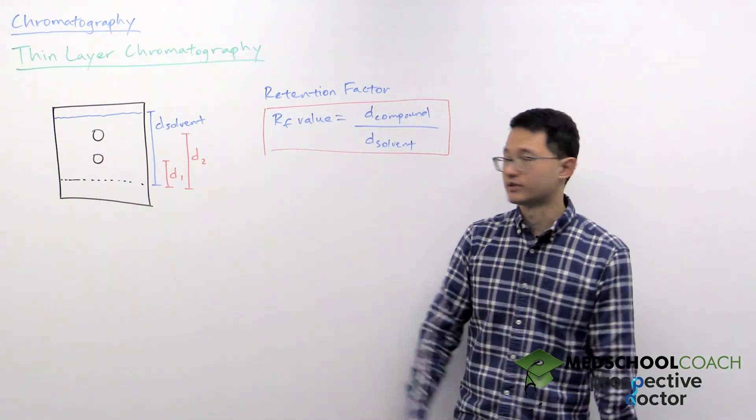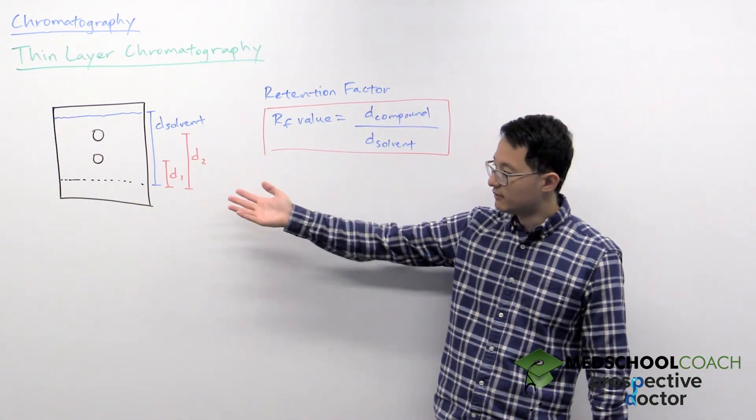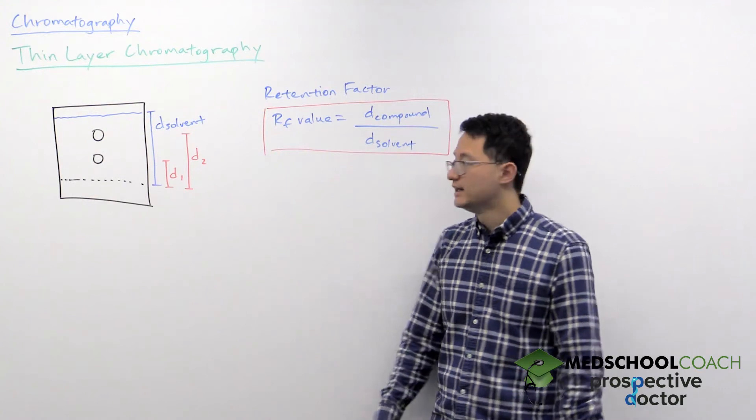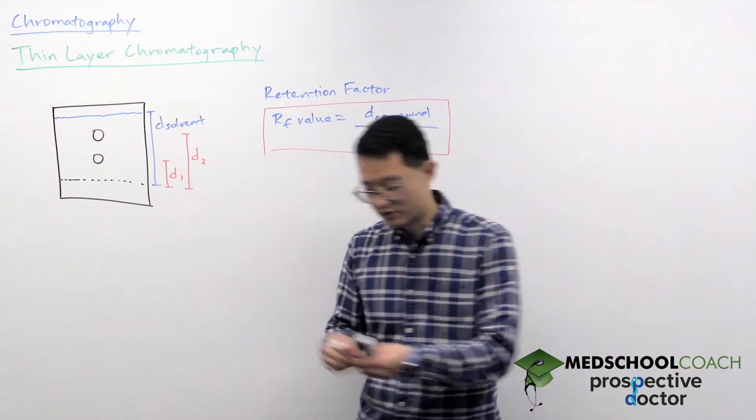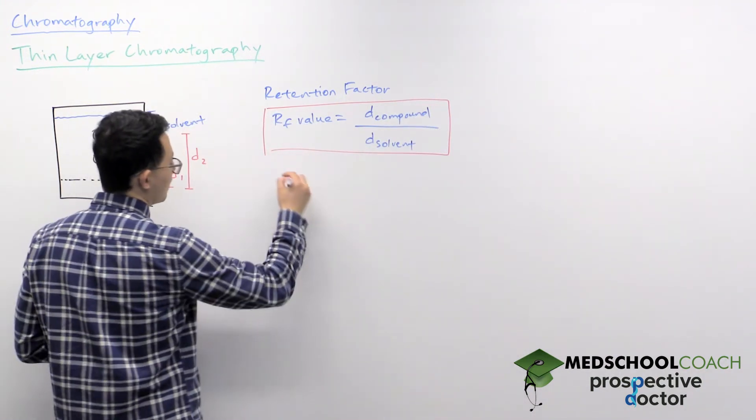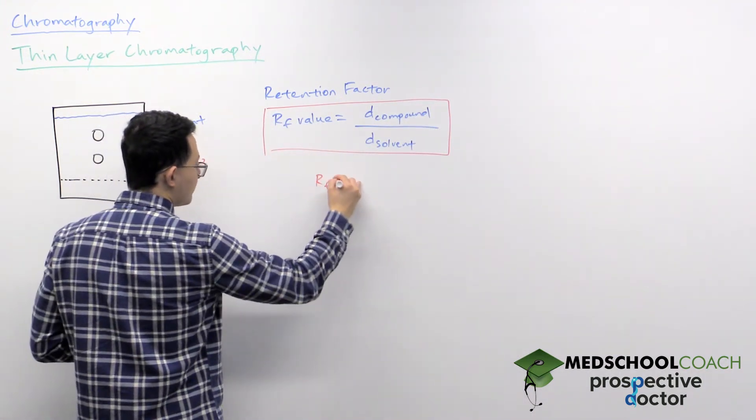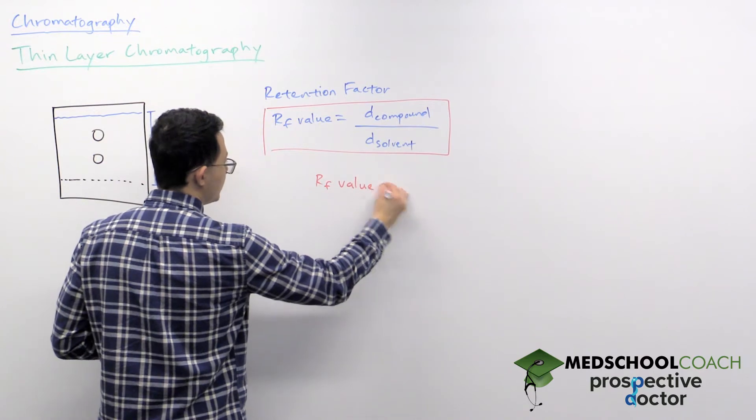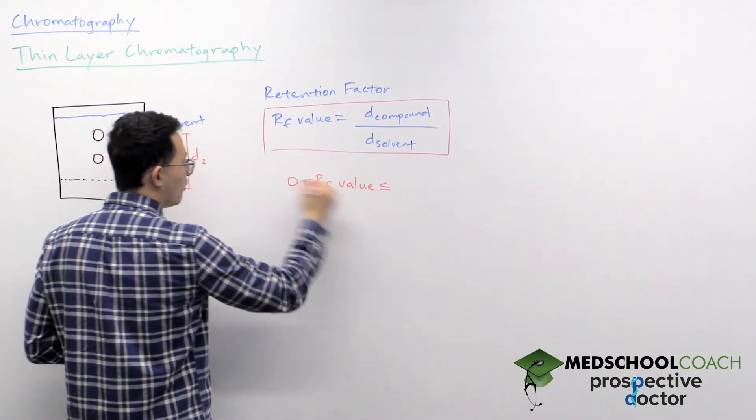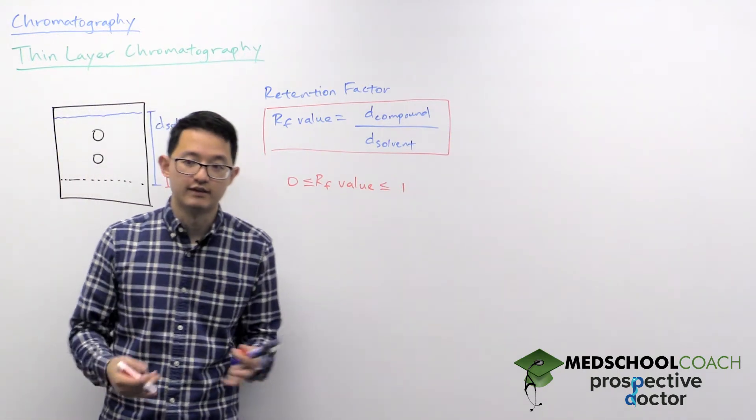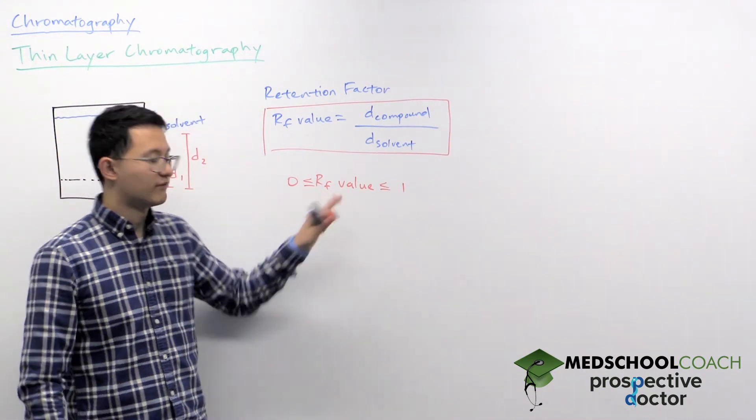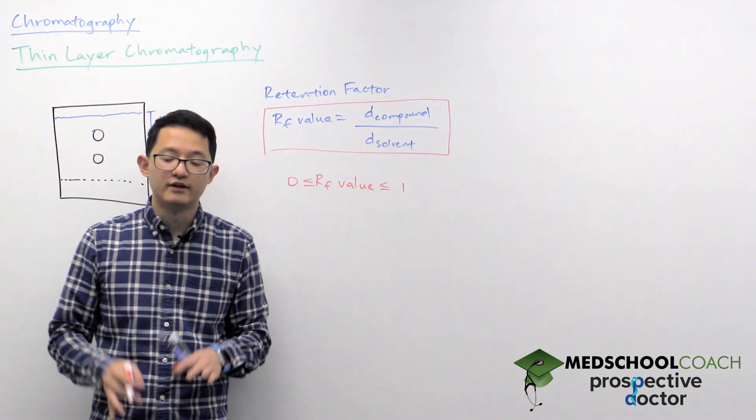Another thing you can actually appreciate from what we can see here in the TLC plate is that the compounds will never move as far as the solvent. So as a result, when you're looking at the RF value, the RF value is always going to be between 1 and 0. Meaning that you can never get an RF value less than 0 and you can also never get an RF value greater than 1.